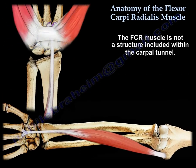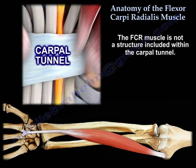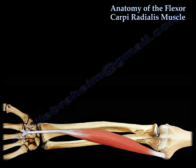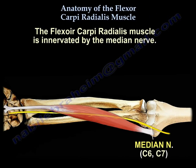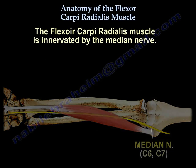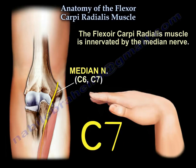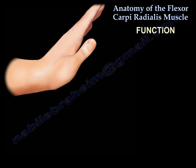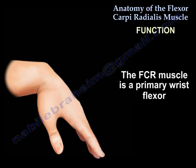The flexor carpi radialis muscle and tendon is not part of the contents of the carpal tunnel. Innervation: it is innervated by the median nerve, C6 and C7, and is a wrist flexor, predominantly C7. Action: it flexes and abducts the hand at the wrist and is a primary wrist flexor.